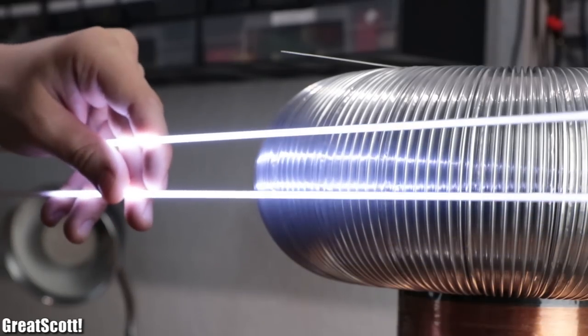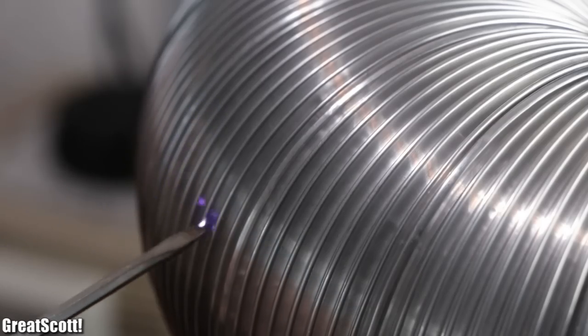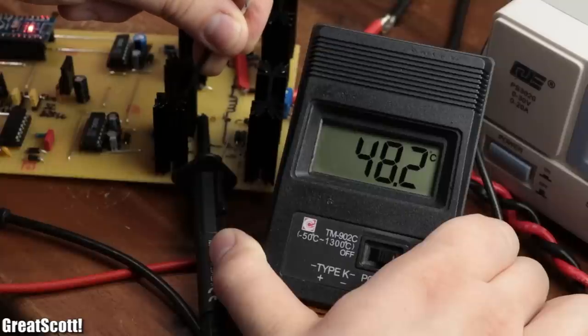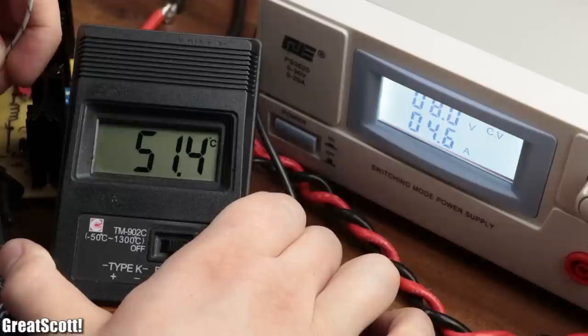But what was noticeable while playing around with the Tesla coil was that the temperature of the IGBTs rose up to 50 degrees Celsius and beyond, even though we only used 8 volts on the input.